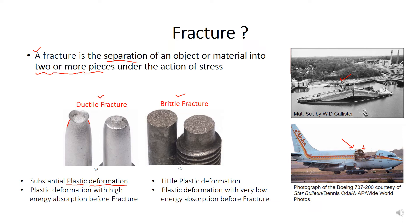Generally, a ductile specimen fails under tensile loading in a cup and cone fracture, where one region is the cup and the other is the cone. In brittle fracture, there is very little plastic deformation, and if plastic deformation is very low it means that particular material has absorbed a very low amount of energy before fracture. There is no visible plastic deformation — it feels as though the component is just being cut down into two parts.